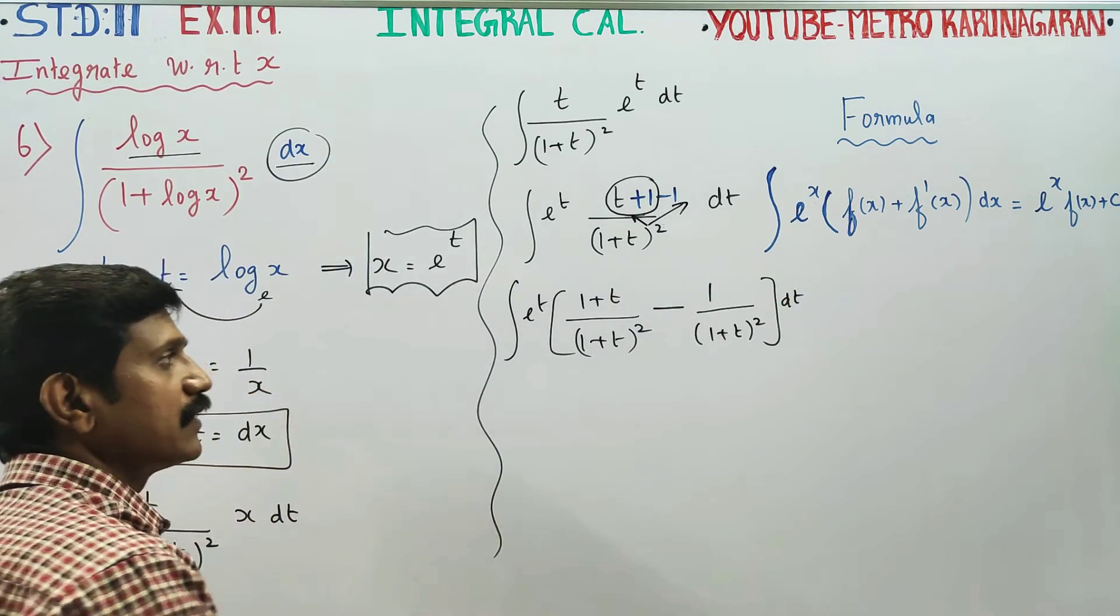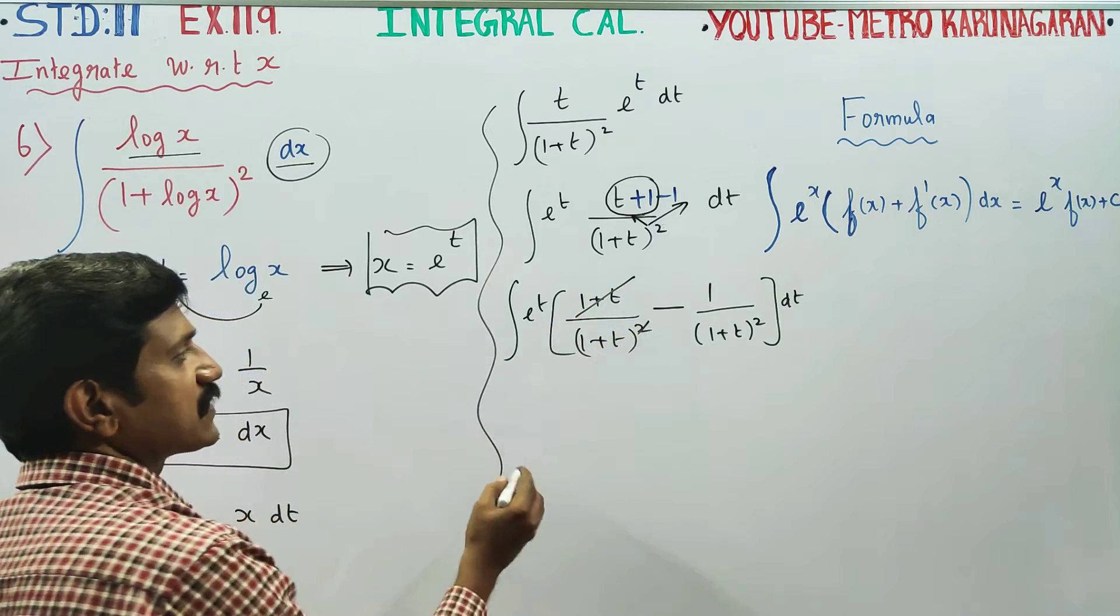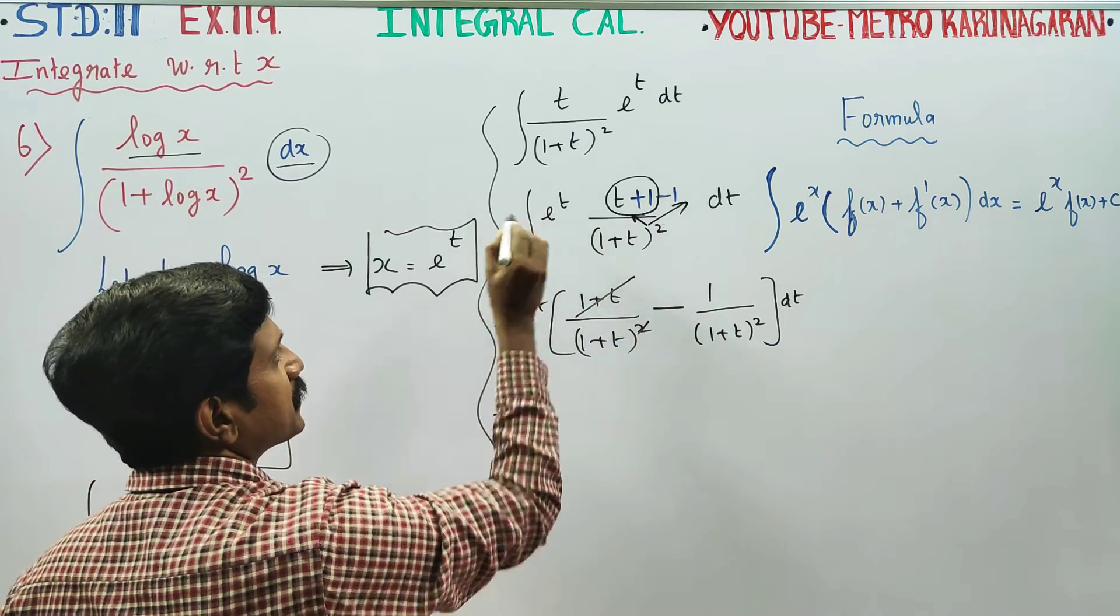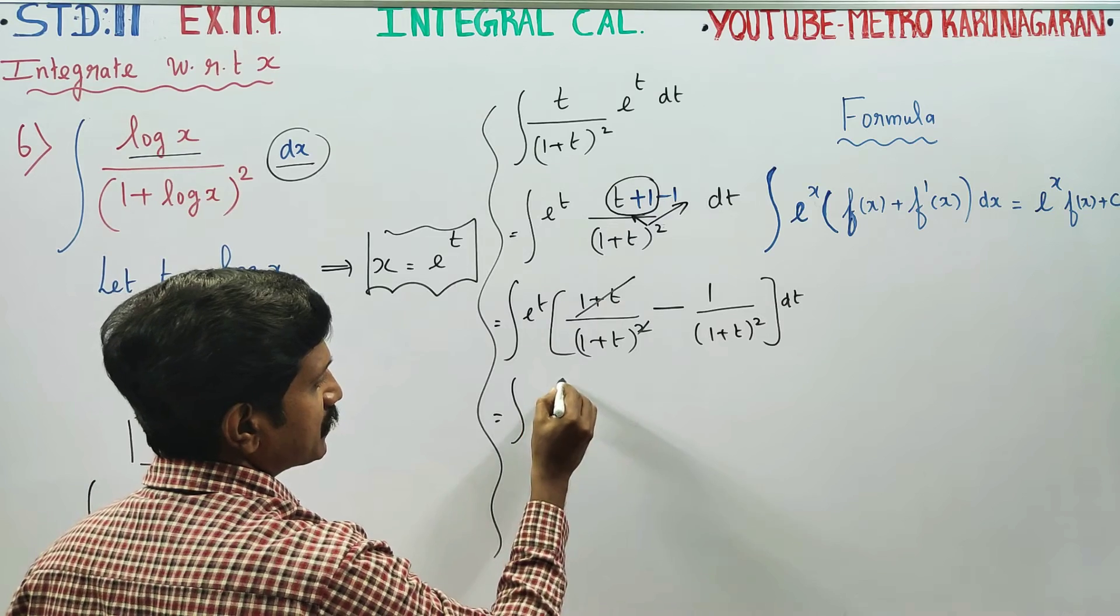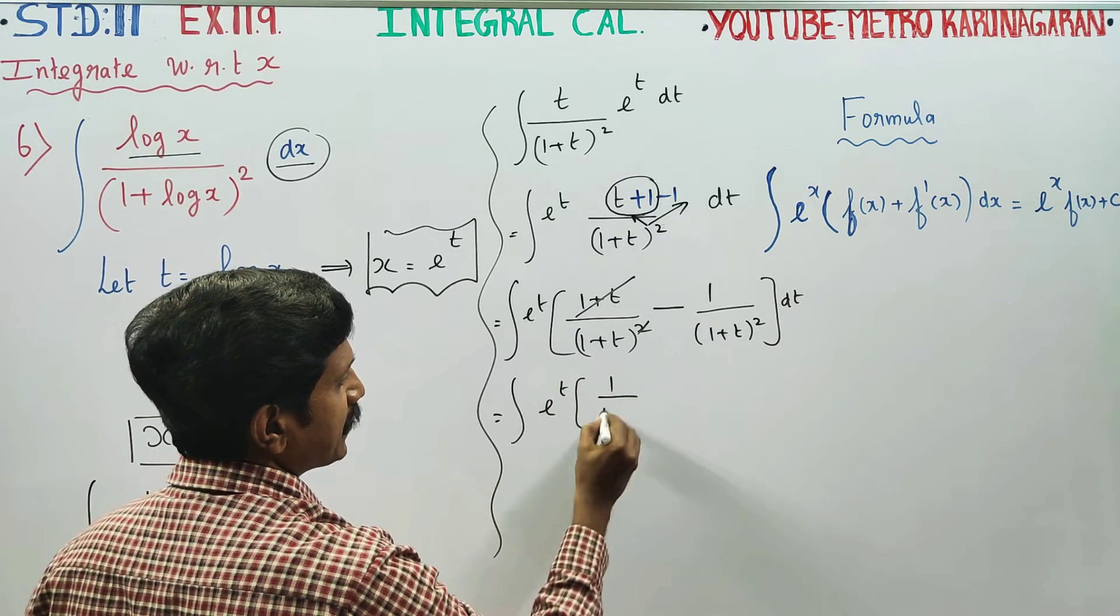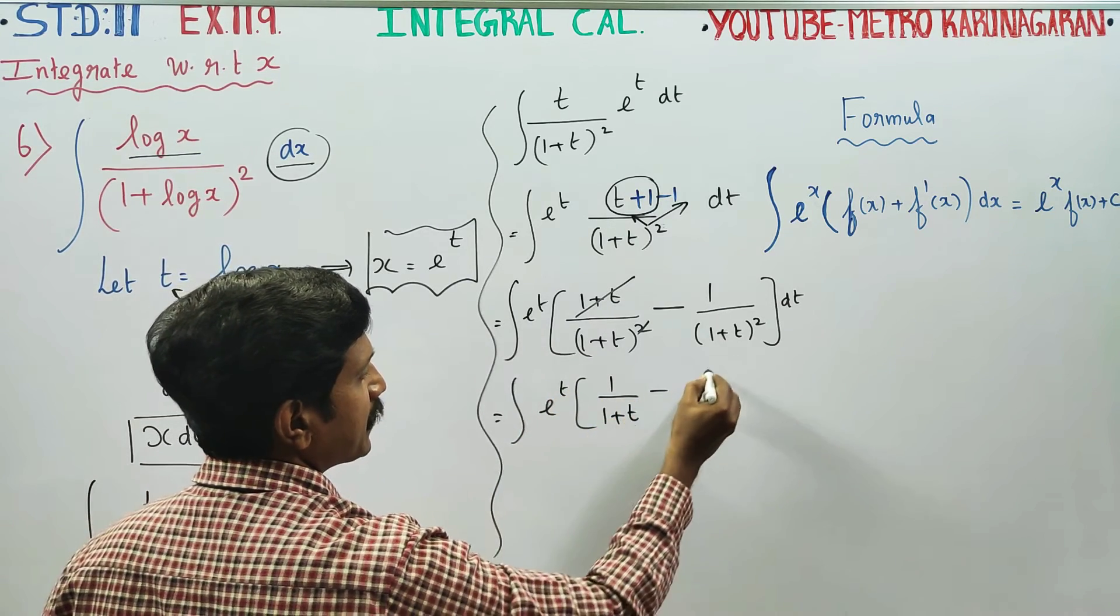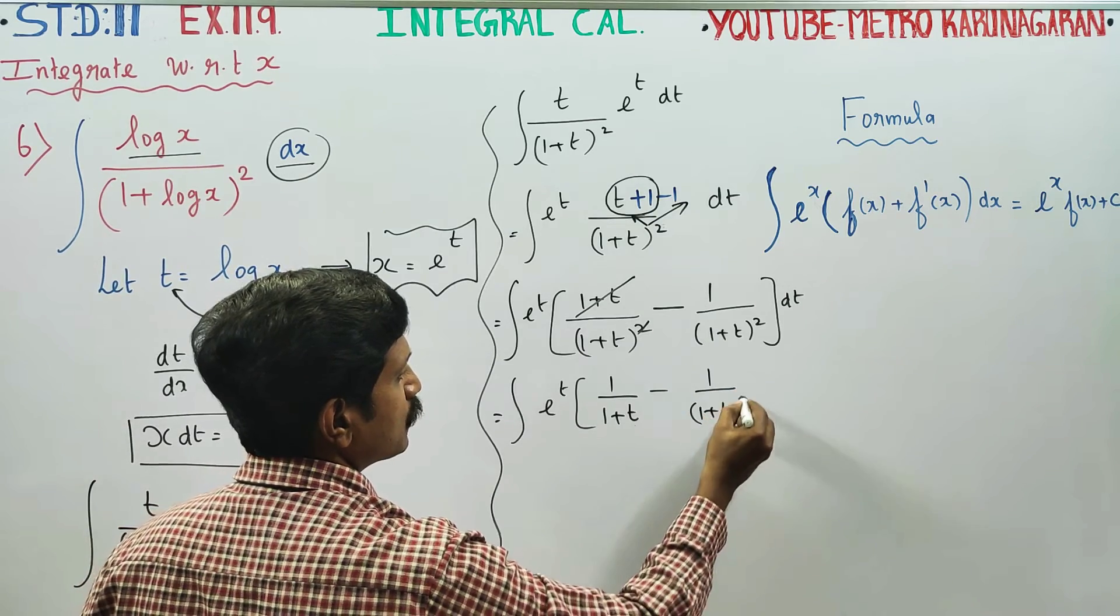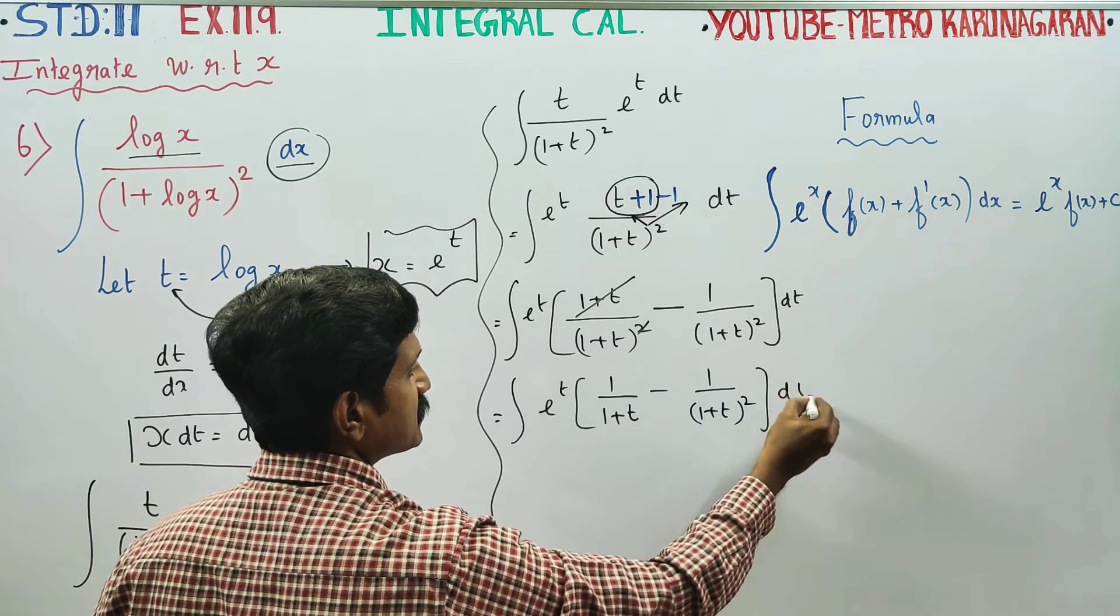1 plus t cancels. Integration e power t, 1 by 1 plus t minus 1 by 1 plus t whole square dt.